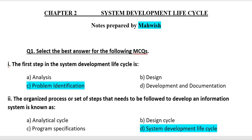Question two: The organized process or set of steps that needs to be followed to develop an information system is known as — (A) Analytical Cycle, (B) Design Cycle, (C) Program Specifications, or (D) System Development Life Cycle. The correct option is Option D, that is System Development Life Cycle.